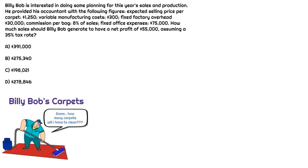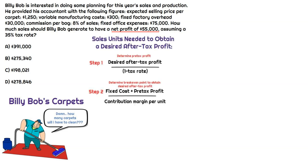We got some wonderful music on because this question is a doozy — it's going to be five steps. What we're going to do here is help Billy Bob figure out how many carpets he's going to have to clean to get that net profit of $55,000. That $55,000 is the desired after-tax profit, and we need to calculate the amount of sales units — how many carpets does Bob need to clean to obtain that after-tax profit of $55,000?